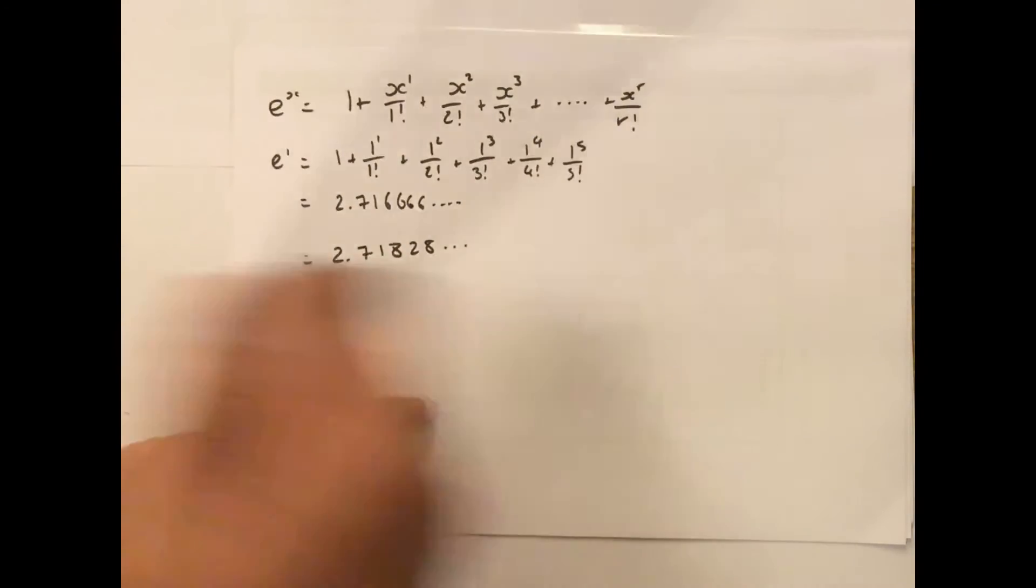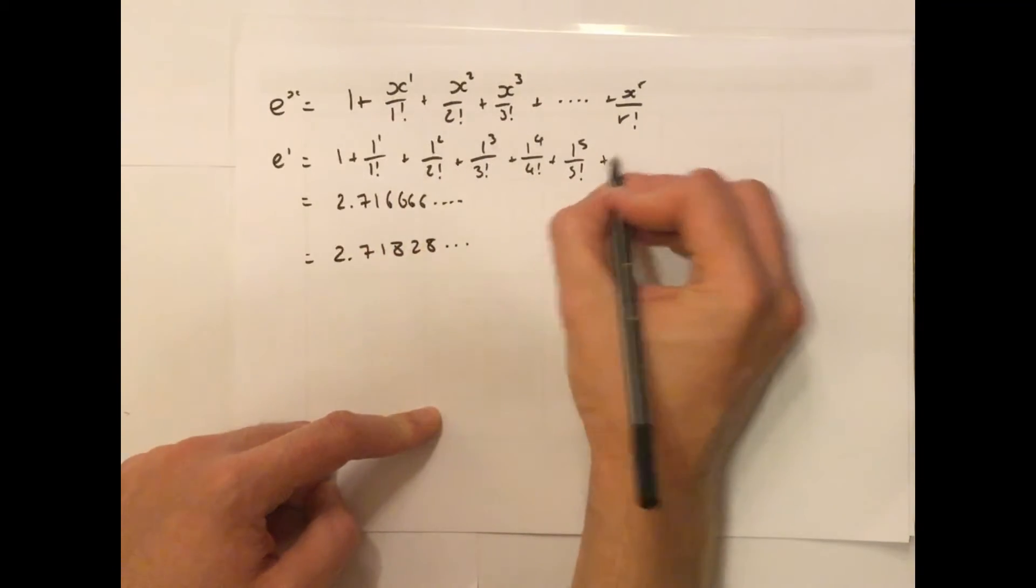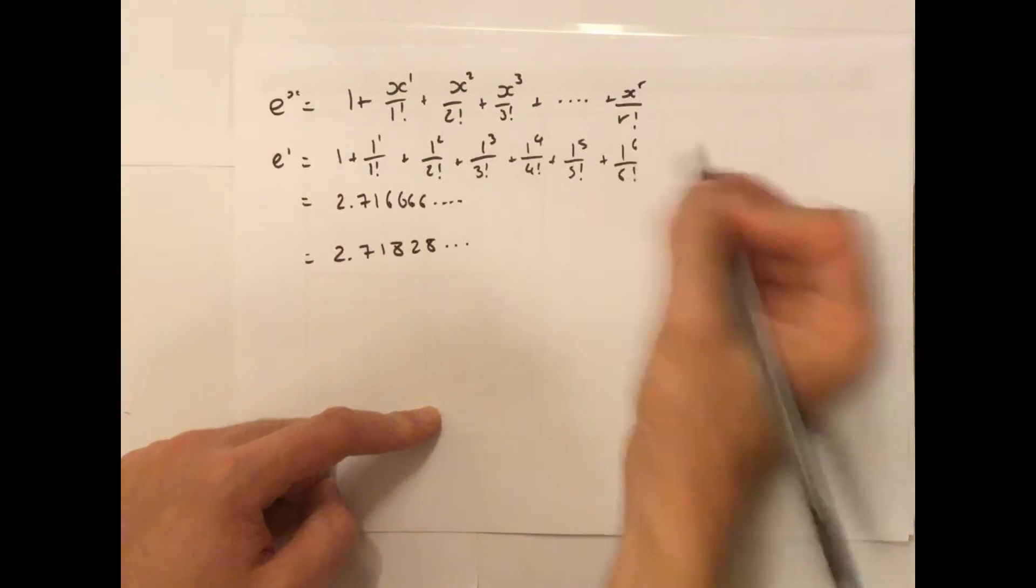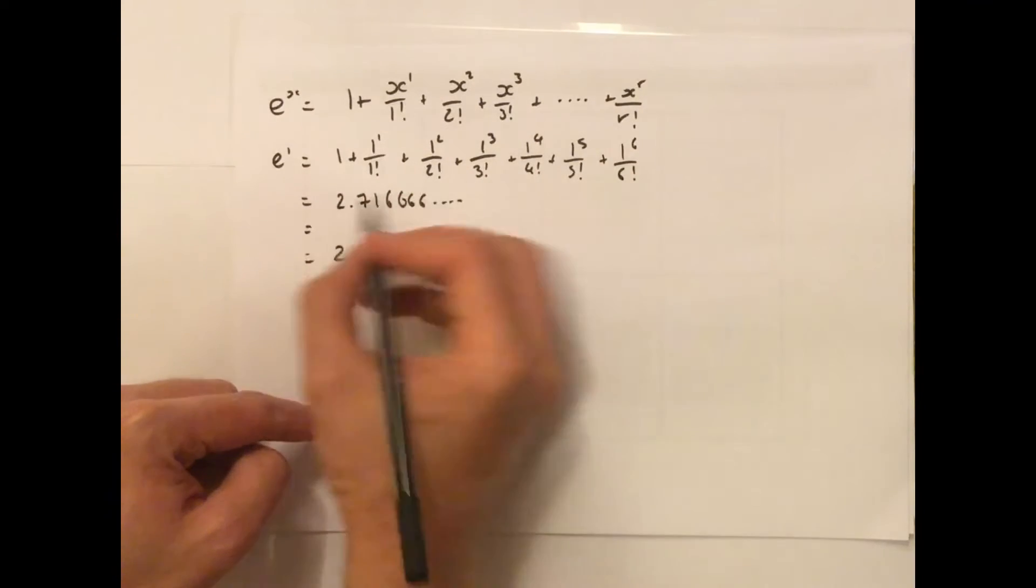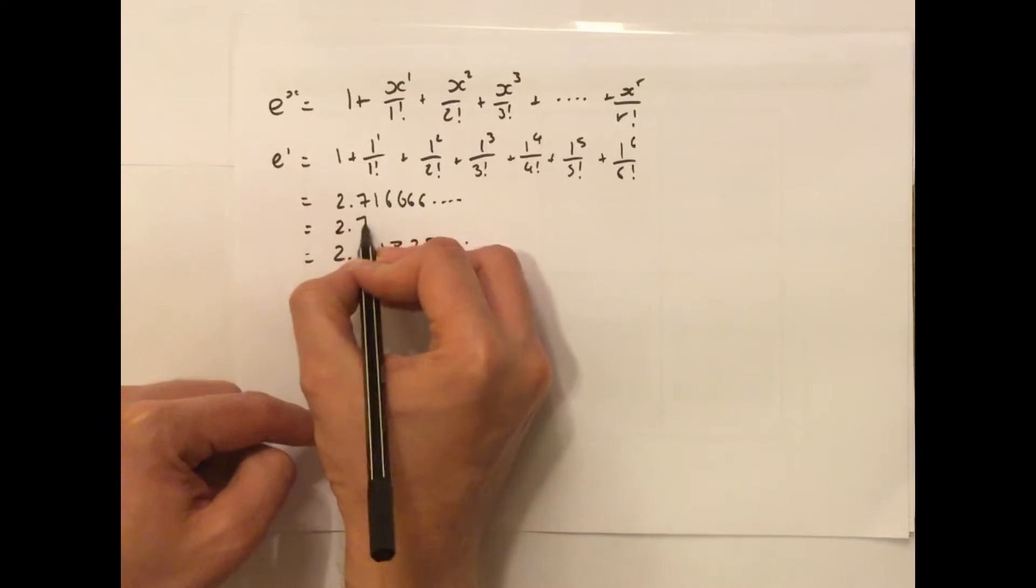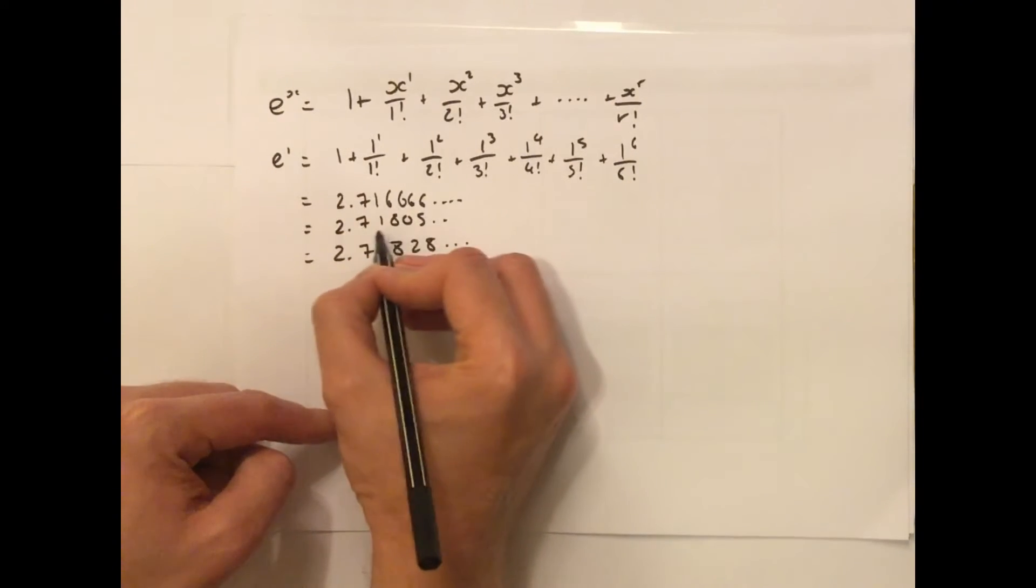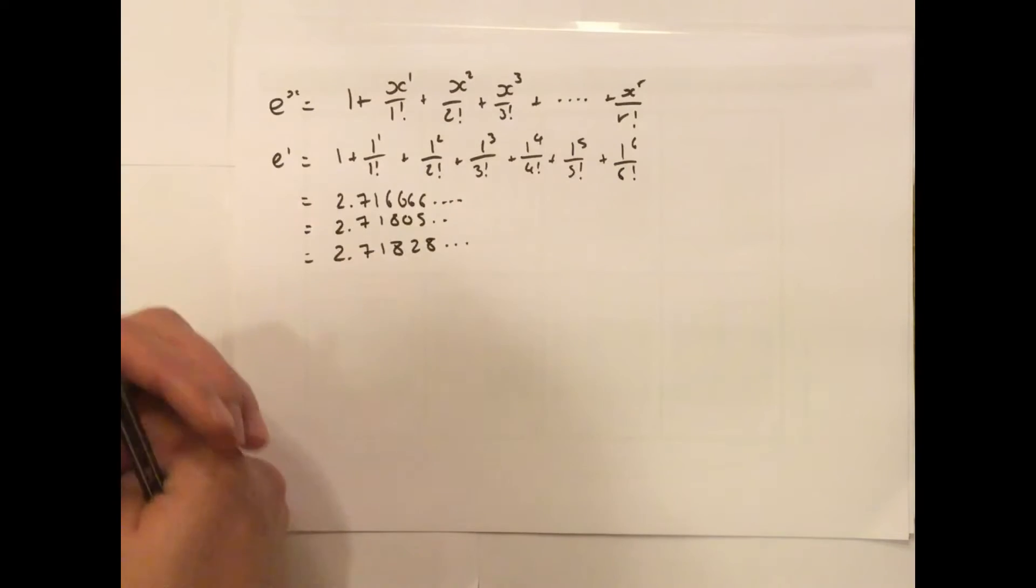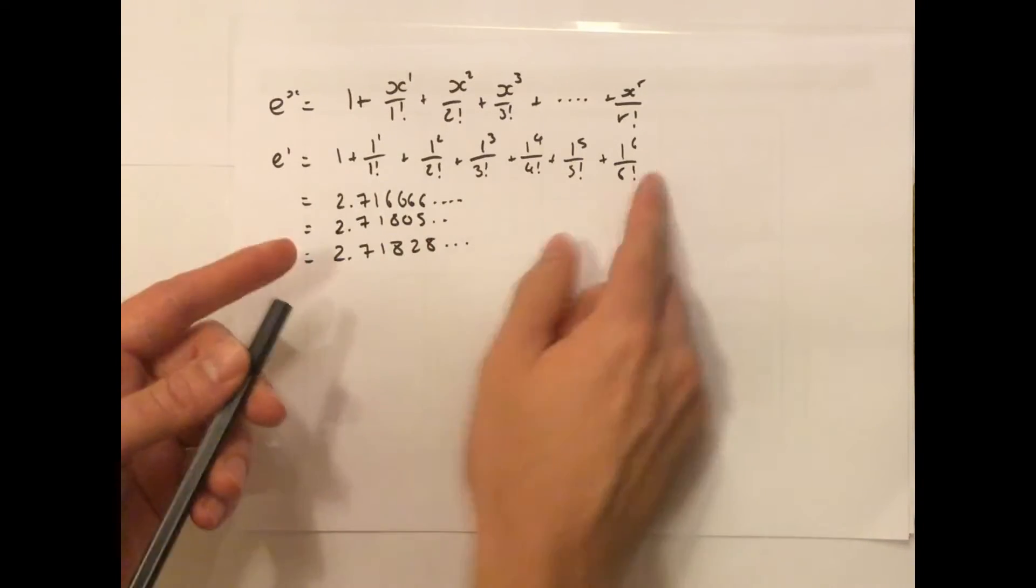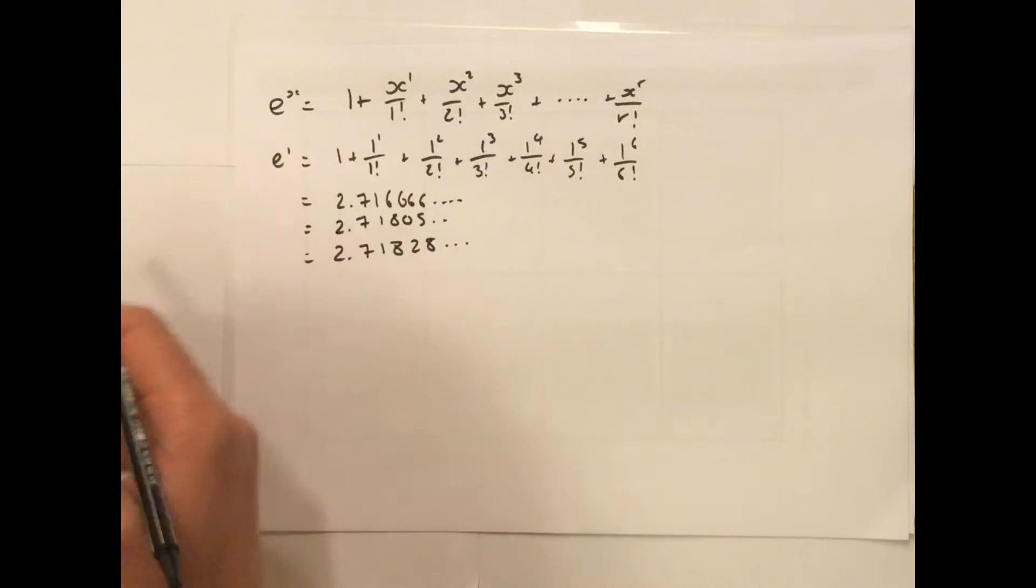And in fact, if you go back to the other calculation and add in 1 to the 6, you'll see that that comes out as 2.71805. So now the first four figures match up. Of course, the more you add in, the closer you get to your calculator's results.